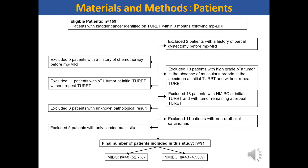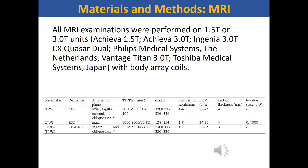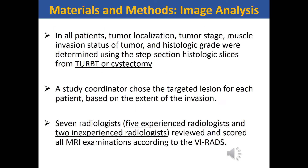This is a flowchart of selection of the study sample. The final study sample comprised 91 patients. All MRI examinations were performed on 1.5T or 3.0T units. The MRI parameters are shown here. The reference standard was the specimen of TURBT or cystectomy. A study coordinator chose the targeted lesion for each patient based on the extent of the invasion. Seven radiologists — five experienced and two inexperienced — reviewed MR images and scored the target lesions according to the VRATS.